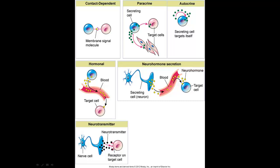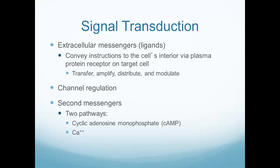Lastly, we have neurotransmitters — the neuron releases its neurotransmitter and targets an adjacent cell. That adjacent cell doesn't have to be in the brain; nerve cells exist throughout the body. It's going to be an adjacent cell rather than a global situation like neural hormone secretion.